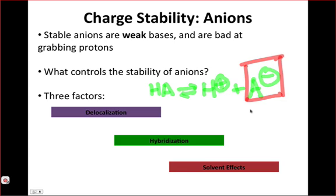Stable anions are weak bases. That makes sense because they're low in energy, and they don't really want to react. So if the equilibrium in terms of thermodynamics favors the right-hand side, in this case, then very little is going to happen going the other way in which A- is serving as a base and picking up a proton. So stable anions are weak bases and are bad at grabbing protons.